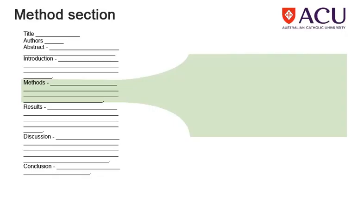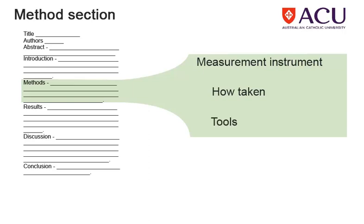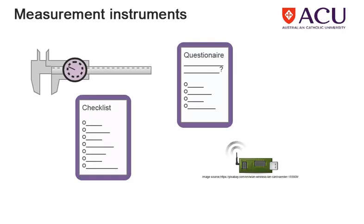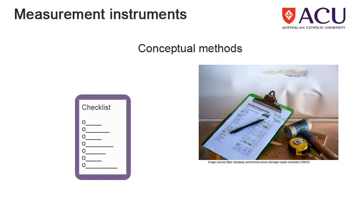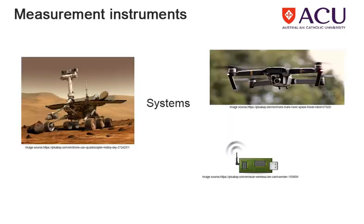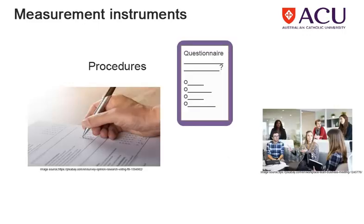The Methods section takes a detailed view of the measurement instrument. It shows or defines how the measurements are taken and describes what tools are used to perform the measurements. There are numerous possible measurement instruments to use, including physical measurements such as using a ruler to measure length, conceptual methods such as using a rubric or observation guide, measurement systems such as sensor arrays or photographic systems, and procedural methods such as surveys, questionnaires, or focus groups.